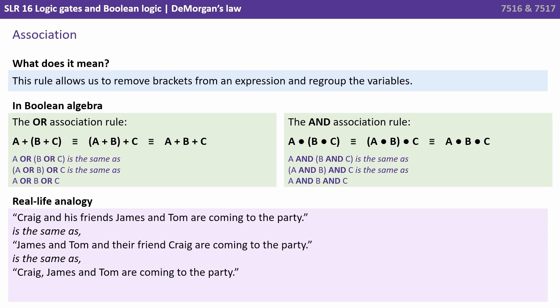Now let's look at association. This rule allows us to remove brackets from an expression and regroup the variables. There are two versions of this. The OR association rule and the AND association rule. And they work in the same way. This is the example we just used in the video where we were saying a bunch of people can go to a party. But we were saying it in different ways because we were grouping people together with brackets. But essentially everyone was going to the party. So with both of these examples you can see we're removing the brackets.